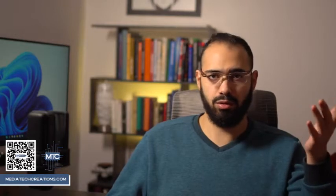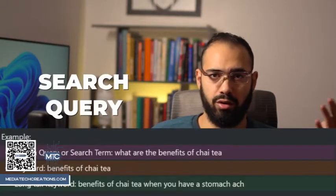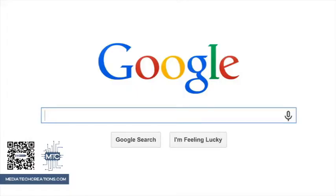When a user writes something in the search bar of Google, that is called a search query or a search term. The search term is what they're writing, and the search query is the act of writing something. The important words used in the search query are called keywords.